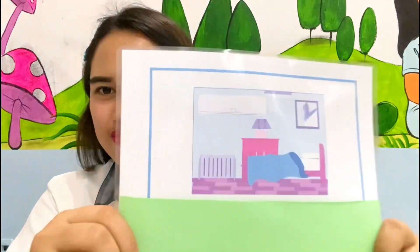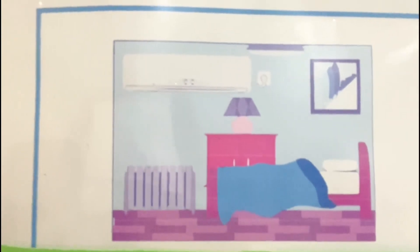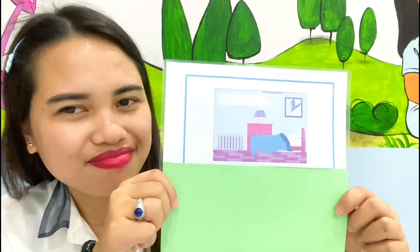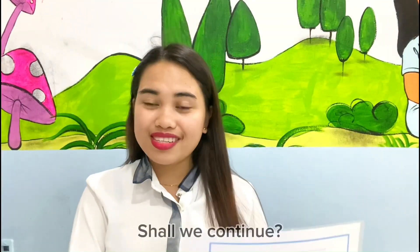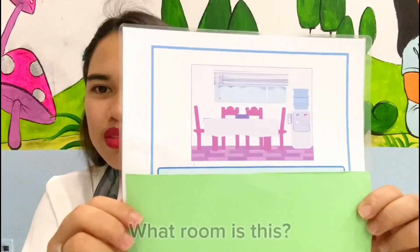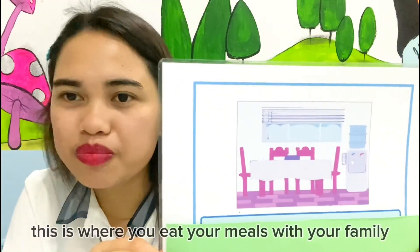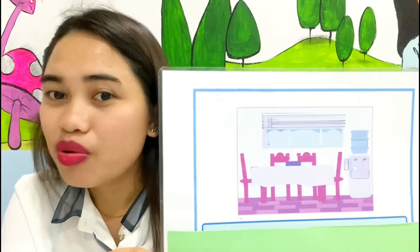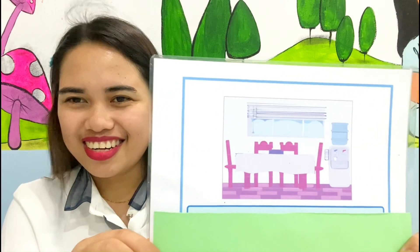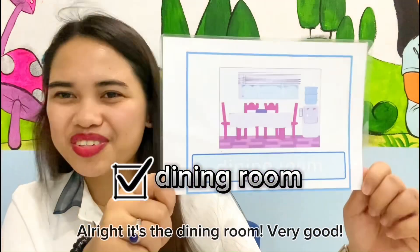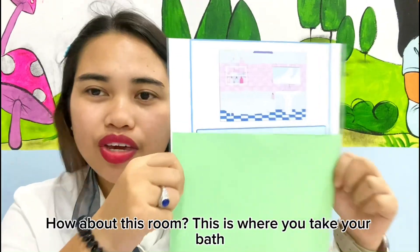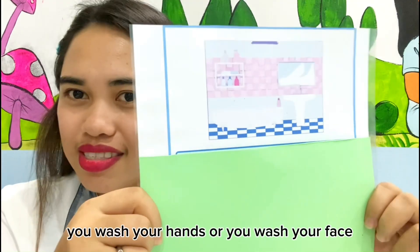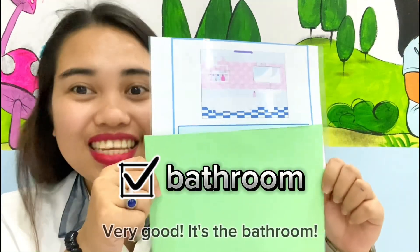Next, what room is this? This is where you sleep. This is where you eat your meals with your family — what room is this? Very good. It's the bathroom.